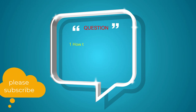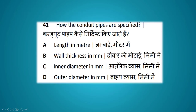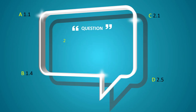Question number one: How are conduit pipes specified? Options: length in meter, wall thickness in mm, inner diameter in mm, outer diameter in mm. The answer is outer diameter in mm.